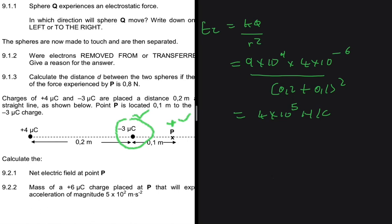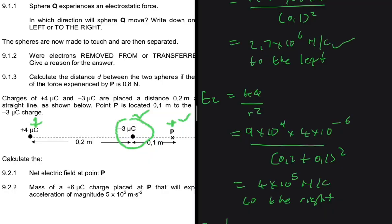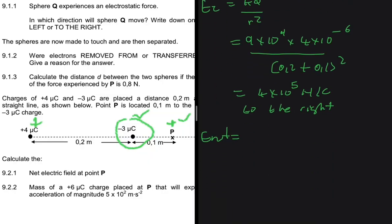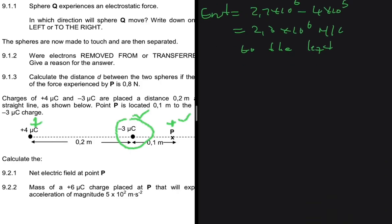Taking left as positive since E1 is greater than E2, E_net = 2.7×10⁶ − 4×10⁵ = 2.3×10⁶ N/C to the left. That completes 9.2.1.